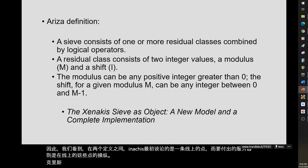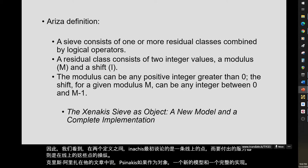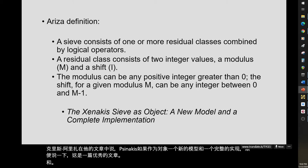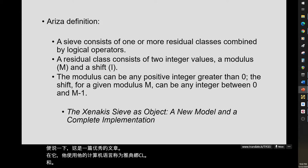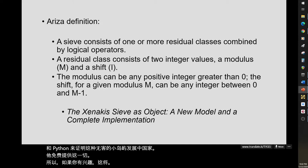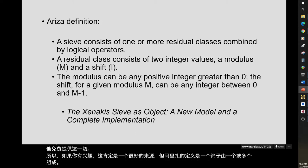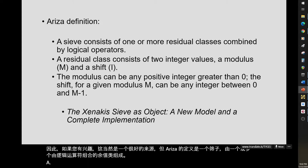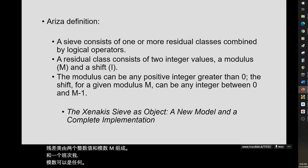Chris Ariza, in his article 'Xenakis SIV as Object: A New Model and a Complete Implementation' — an excellent article — uses his computer language called Athenae CL and Python to demonstrate the Xenakis SIVs, and he makes all of that available for free. Ariza's definition: a SIV consists of one or more residual classes combined by logical operators. A residual class consists of two integer values: a modulus M and a shift I. The modulus can be any positive integer greater than 0. The shift for a given modulus M can be any integer between 0 and M minus 1.